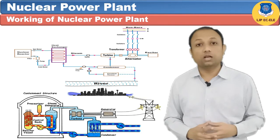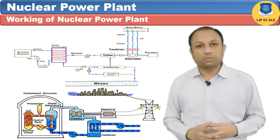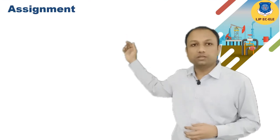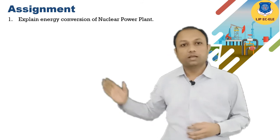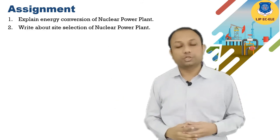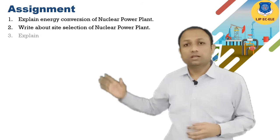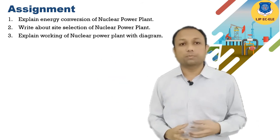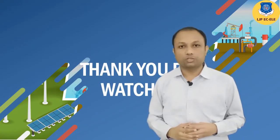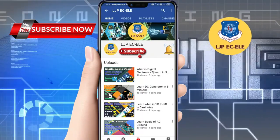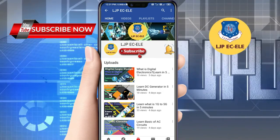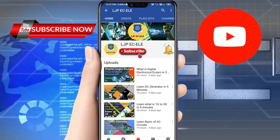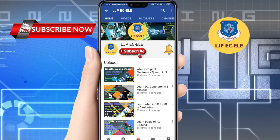This is about the working of the nuclear power plant. Here are the assignment questions: first, explain the energy conversion of nuclear power plant; second, write about the site selection of nuclear power plant; third, explain the working of nuclear power plant with a diagram. Hope you enjoyed the video. Thank you for watching. If you like this video, please subscribe and like our YouTube channel LJPEC-ELE, and don't forget to click on the bell icon to get the latest video updates.